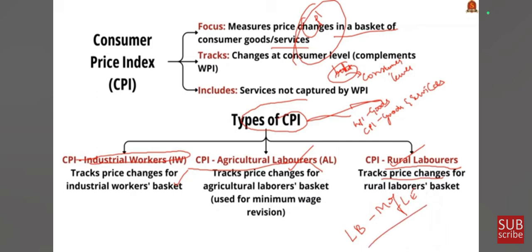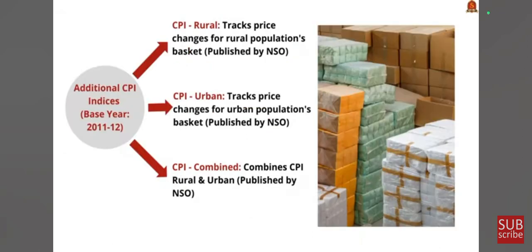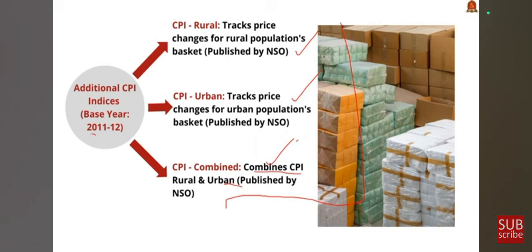Even if these indices exist, they cover only a segment of the population. That is why three more indices have been designed with respect to CPI. CPI Rural measures the change in prices of commodity basket consumed by the rural population. CPI Urban covers urban population consumption, and CPI Combined combines both urban and rural population data. The base year for all these calculations is 2011–12 and they are published monthly by NSO, Ministry of Statistics and Programme Implementation.